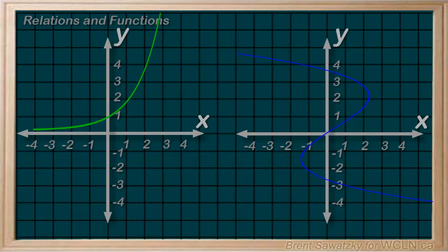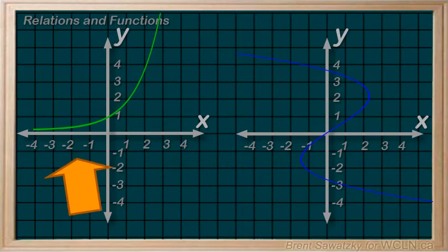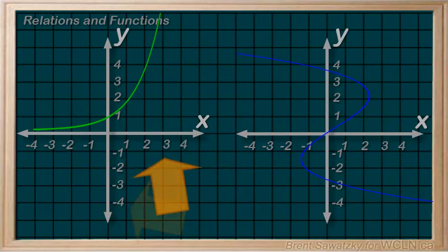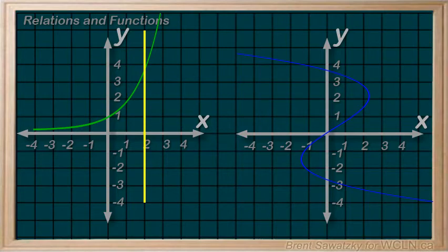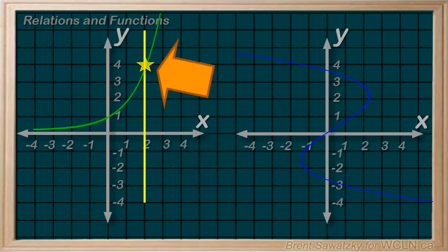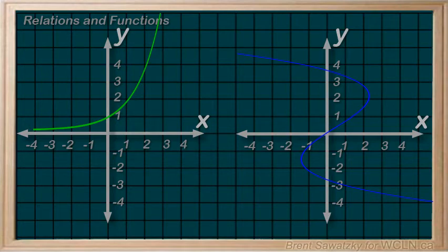Some relations in graphical form this time. Are these relations also functions? Thinking again about our criteria: a function has only one y-value for any x-value. On a graph, the x-values are along the x-axis and the y-values are along the y-axis. So for any x-value — for example, x equals 2 — we have to ensure that there's only one y-value, which is clearly the case here. We have to check all x-values, and an easy way to do that is called the vertical line test.